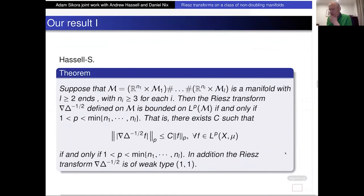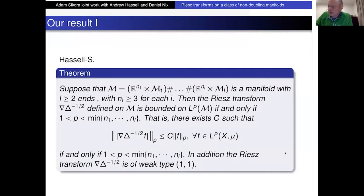Our results consider this class of manifolds with ends. In the first result, we consider all dimensions to be bigger than or equal to three. There's actually a quite significant difference between dimension greater than or equal to three and dimensions two and one. This is connected with whether the manifold is transient or recurrent - that's an interesting enough change that it significantly alters the situation. The assumption that N is bigger than or equal to three is not just a technicality; there's a really significant difference.